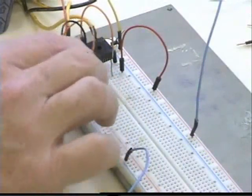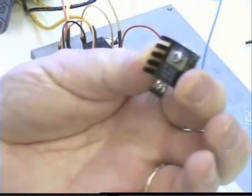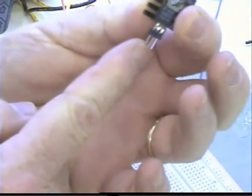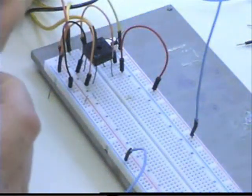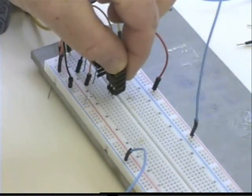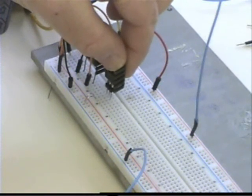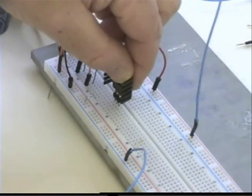We'll move this ground jumper back just a little bit. Here now is my 7805. The input is here, ground output. I'm going to go ahead and insert the regulator over here.